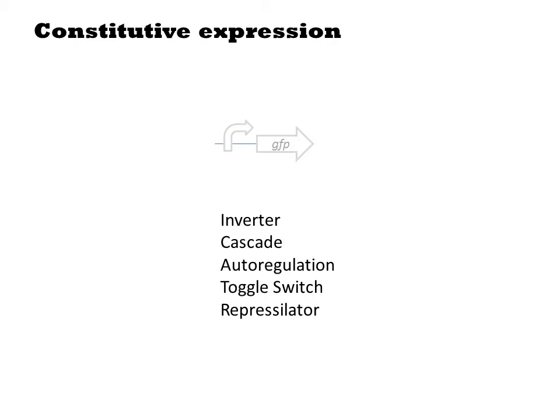Several of the simple configurations have been given names in the field, so let's outline them briefly. In each case, there is an input promoter, and at the start of the experiment, the promoter is turned on by derepression of a transcription factor. Typically, this input promoter will be the TET or LAC promoter, and you can turn those on with ATC or IPTG.